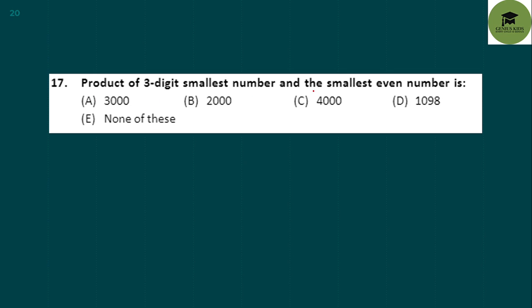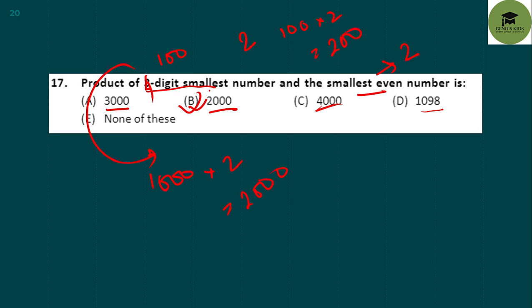Product of the 3-digit smallest number and the smallest even number: this question appears to have an error. The 3-digit smallest number is 100, and 100 × 2 = 200, which doesn't match the options. Based on the options given, it should be the 4-digit smallest number, which is 1000. So 1000 × 2 = 2000. Option B is your correct answer.